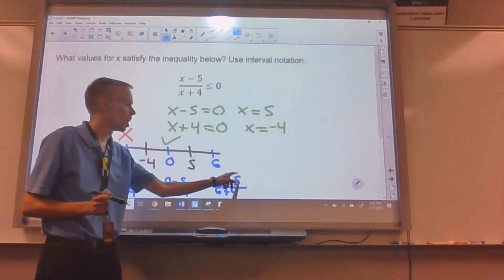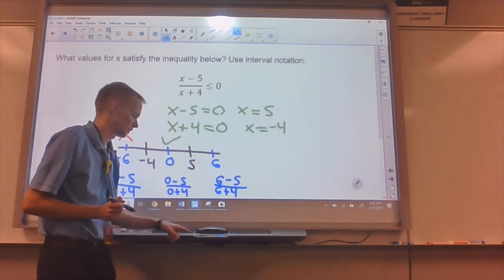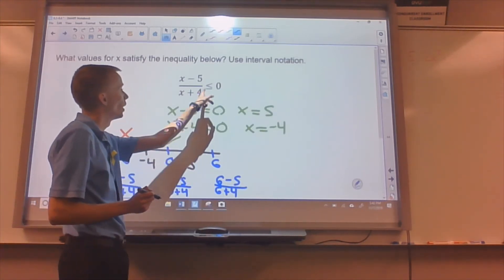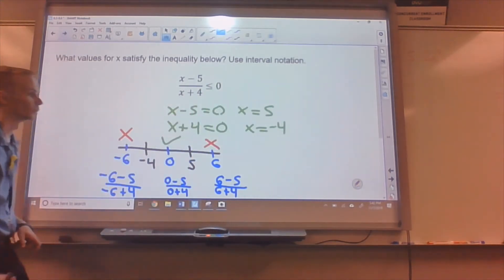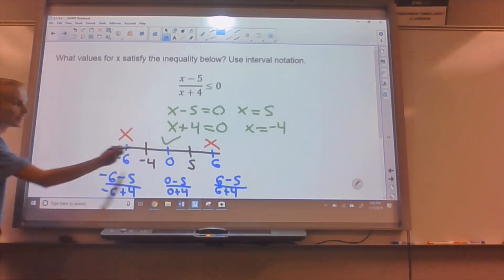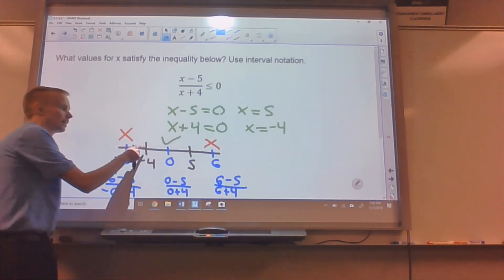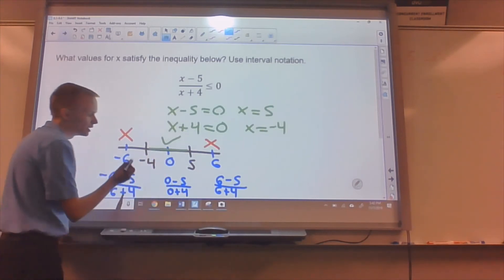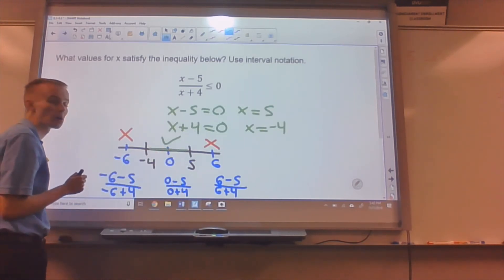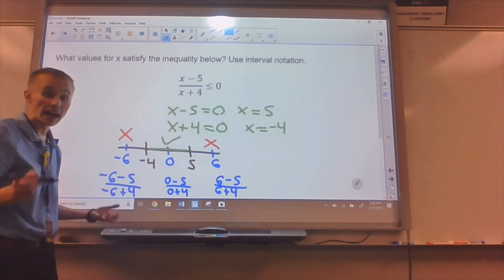So we get a positive number here. And we wanted our numbers to be negative. So the inequality is untrue on the right there. So we figured out our solution. They have to live in this in-between region between negative four and positive five.